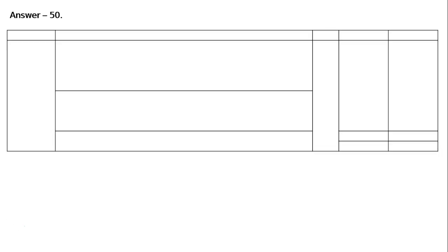Debtors are good — pass necessary journal entry. Debtors are good means provision will be nil. Provision for doubtful debt will be nil. This 5,000 will be nullified. Hence, answer 50 in the proper journal format.